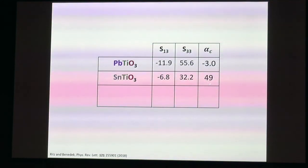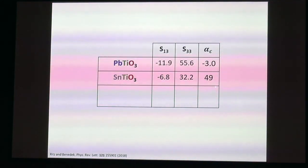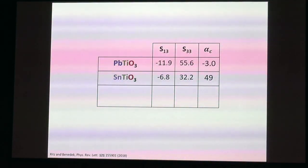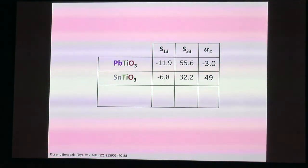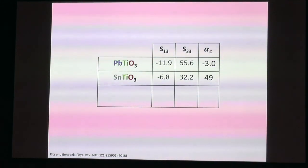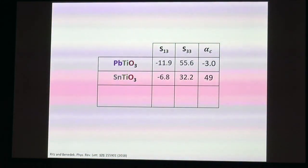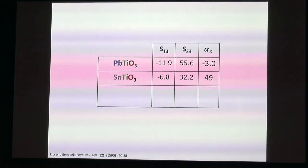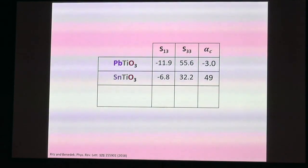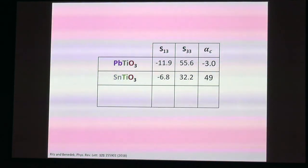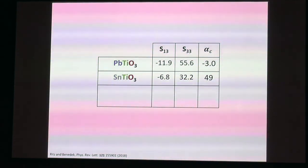In lead titanate the c/a ratio is closer to 1—it's less tetragonal. In tin titanate there's stronger hybridization, it's more tetragonal, and gives positive thermal expansion. So which is more important in the distorted phase: the lone pair chemistry or the crystal structure? A table shows the relevant elastic constants and α_C for both materials. For tin titanate, S₁₃ is less negative—less elastic coupling between A and C. S₃₃ is less positive—the C-axis is less compliant. The net effect is a positive α_C and positive volumetric thermal expansion.